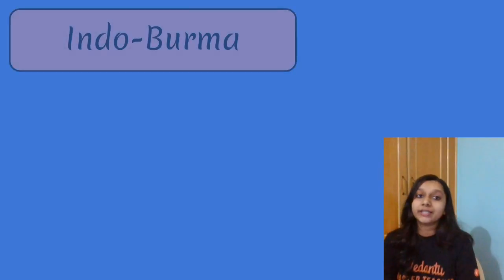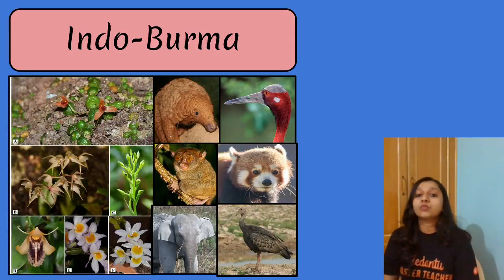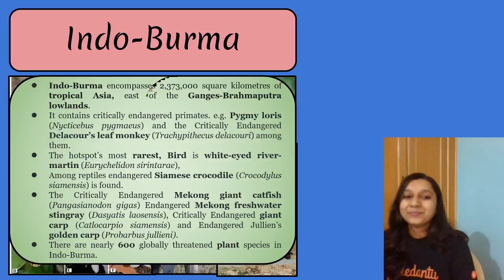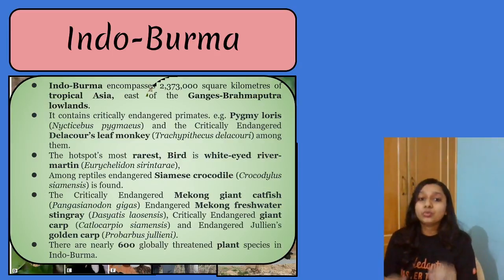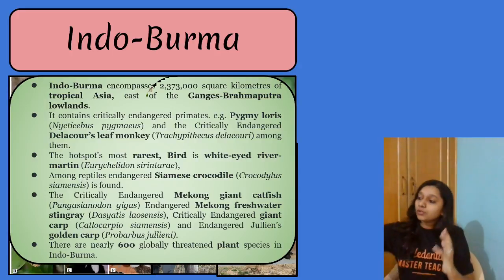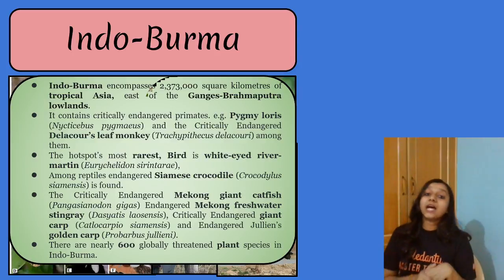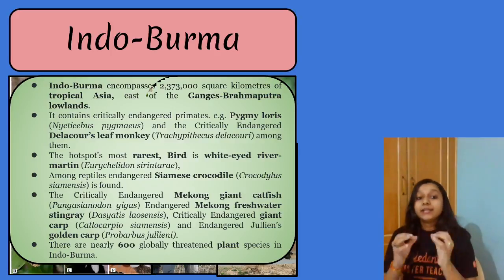The third hotspot is known as the Indo-Burman region, which has different types of animals, mammals, and plants. It covers more than 2,373,000 square kilometers — a huge area. This hotspot covers the lowland and tropical regions of Asia, including the Ganga and Brahmaputra plains. The pygmy loris is a critically endangered animal found in the Indo-Burman region.